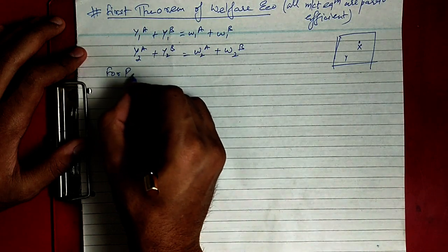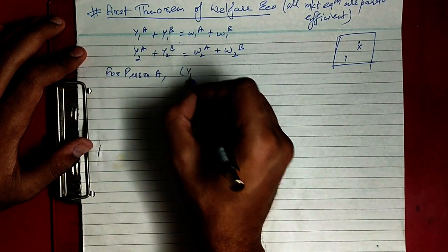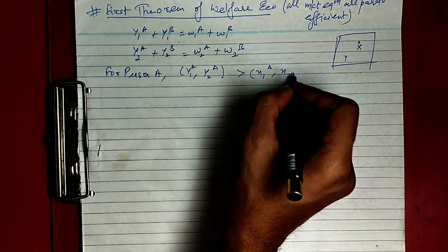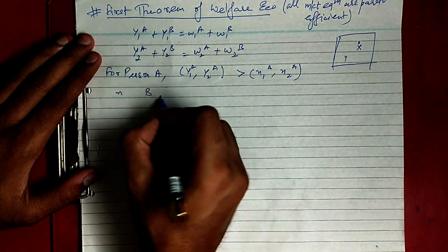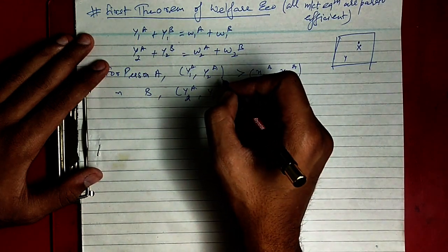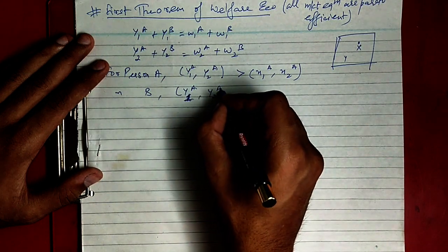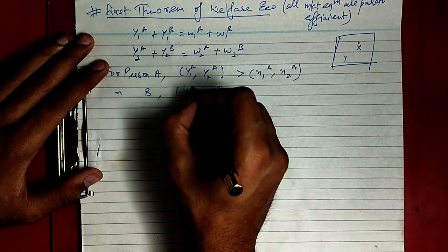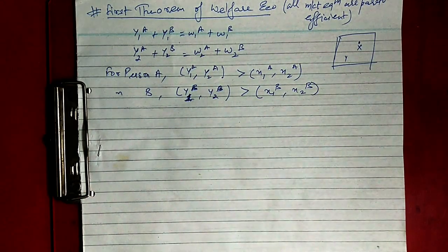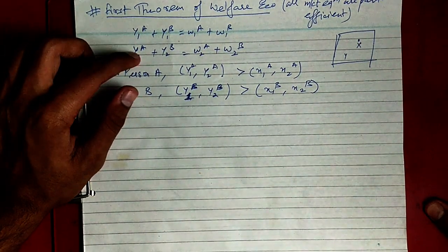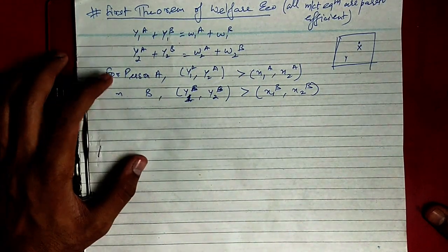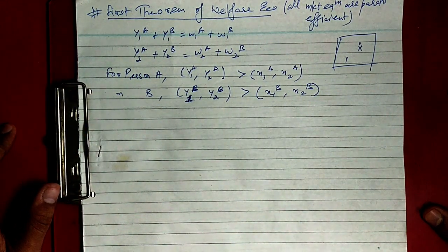For person A, the bundle (y1a, y2a) is preferred over (x1a, x2a). Similarly for person B, (y1b, y2b) is preferred over (x1b, x2b). The first two equations tell us that the y allocation is feasible, and the next two equations say that y is preferred compared to the x allocation.